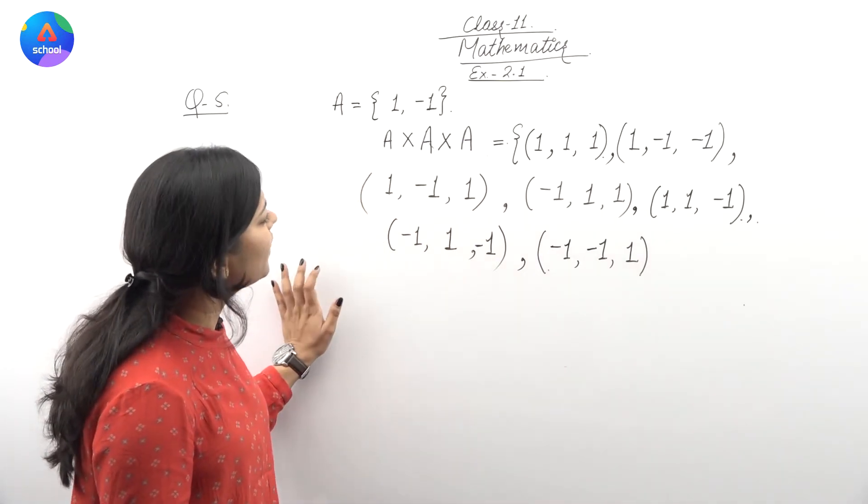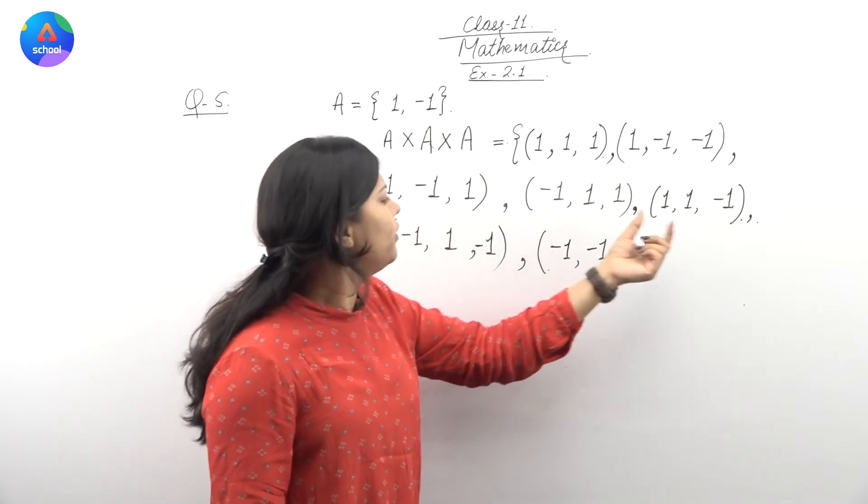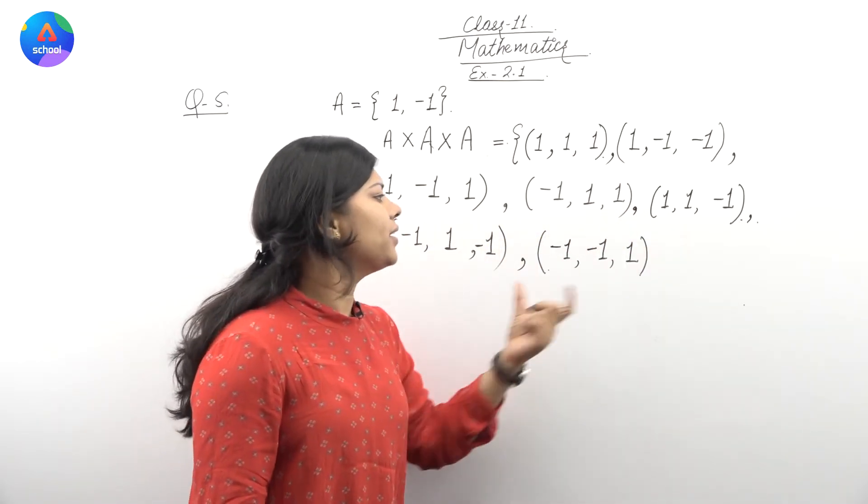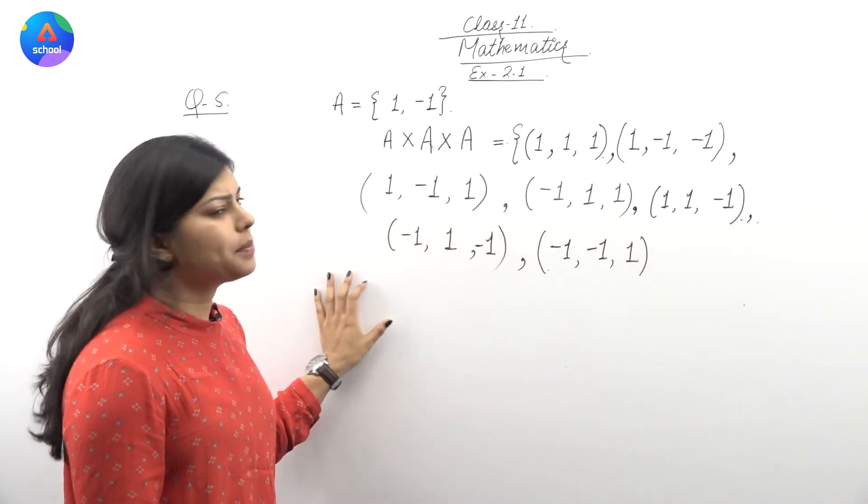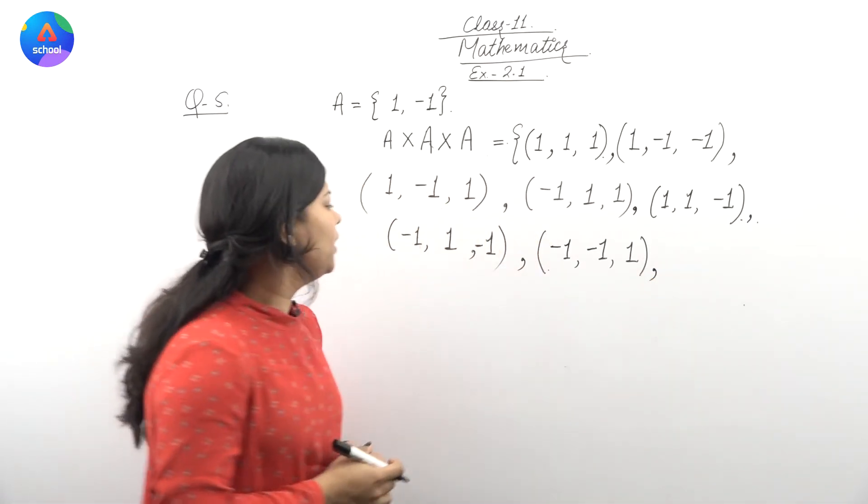So humare paas, yahaan kitnay elements ho gae? One, two, three, four, five, six, and seven. Aur, mai ne abhi aapko bata ya tha, humare paas eight elements ho gae, yani ki, humare paas ek element abhi bhi raha gaya hai.